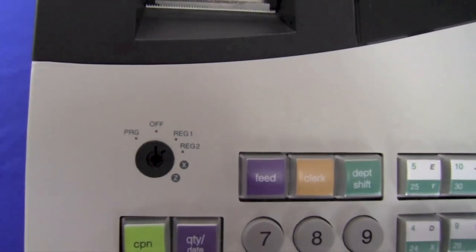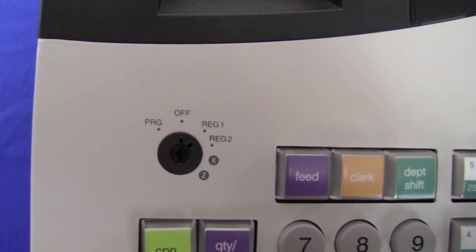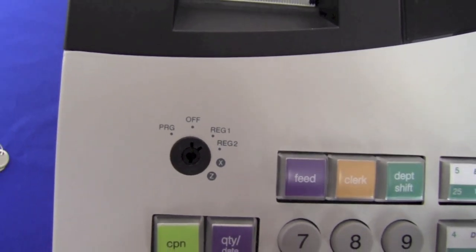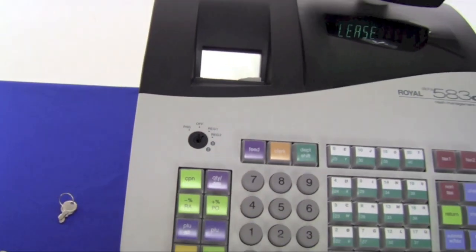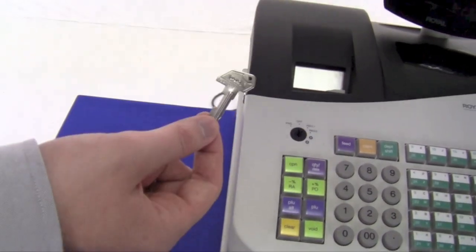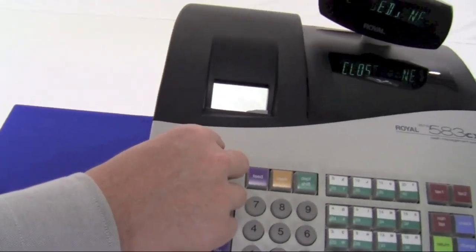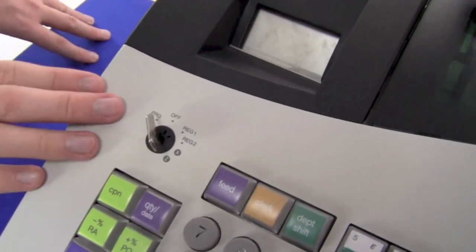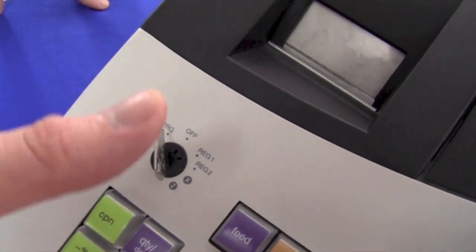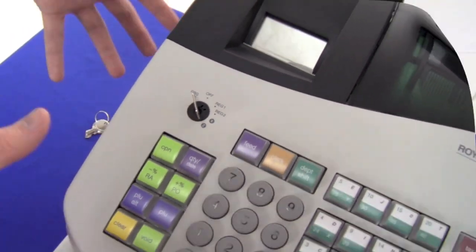The machine has five settings, each accessible with specific keys. The first is the program key, marked PRG. This key, when turned to program mode, enables users to do things such as set department titles, tax rates, and passwords. It also can run the register settings.